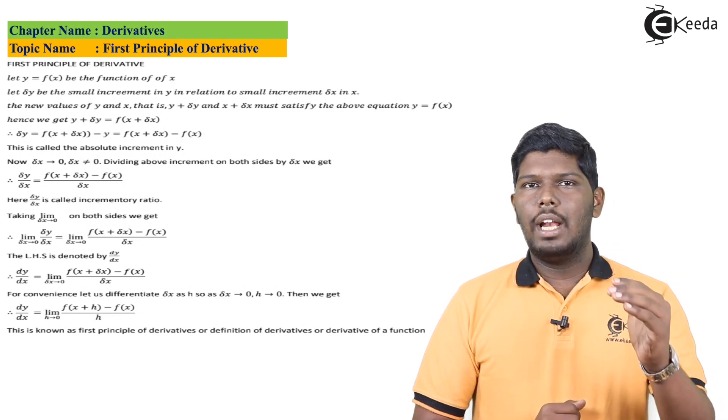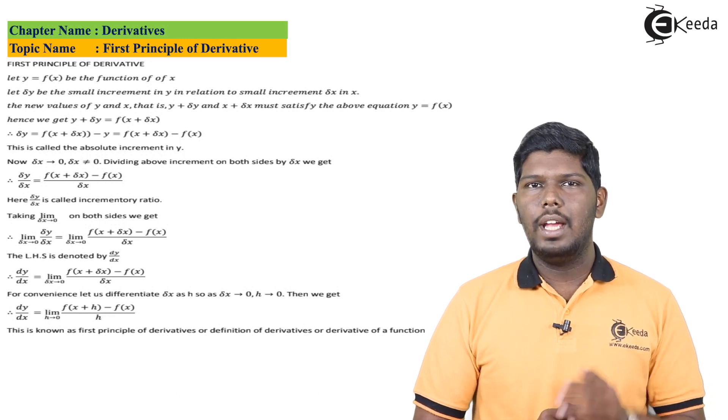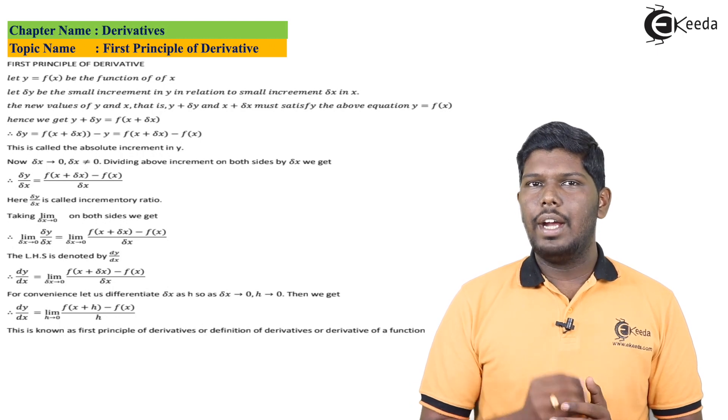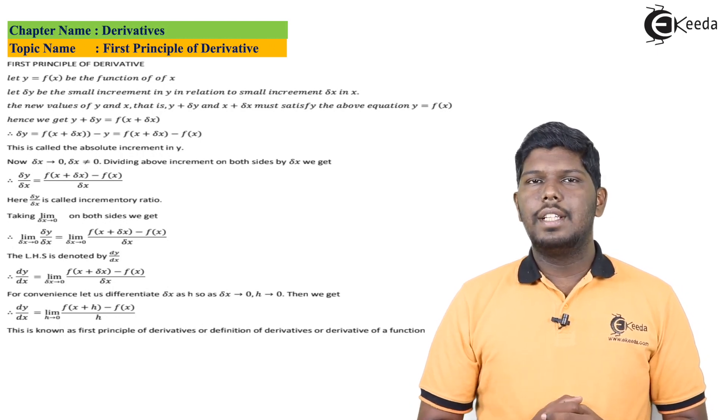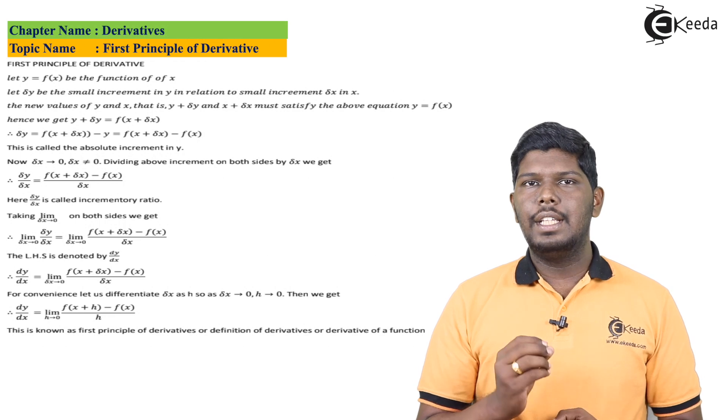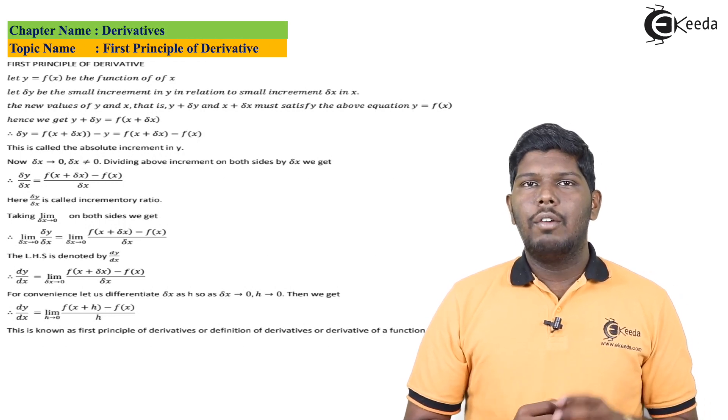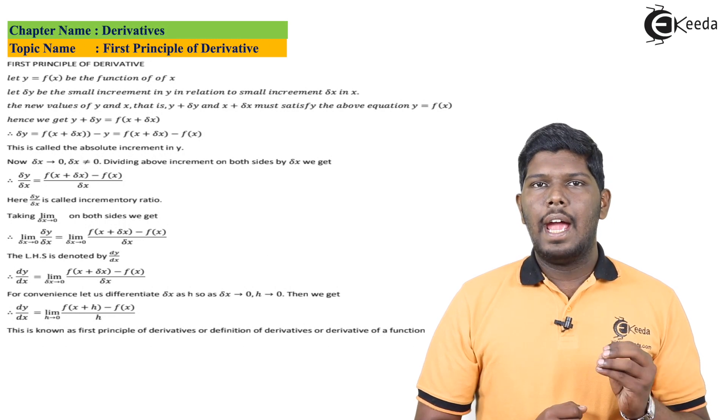So del y upon del x, its value will be f of x plus del x minus f of x divided by del x. After getting this ratio of del y by del x, this ratio is also called the incrementary ratio. Now the next step will be we'll take limits on both sides and in this del x will be tending to 0.